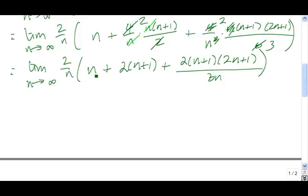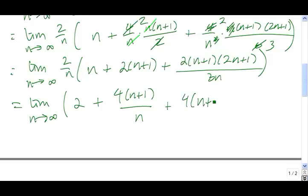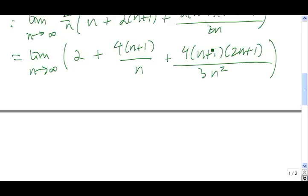Next we distribute the 2 over n and we get 2 over n times n, that's 2. 2 over n times 2 times n plus 1 is 4 times n plus 1 divided by n. Then plus, we multiply the 2, we get 4n plus 1, 2n plus 1 divided by 3n times another n gives us n squared. So now we should multiply this n plus 1 times 2n plus 1. If we do, we get 2n squared plus n plus 2n, that's plus 3n, plus 1.